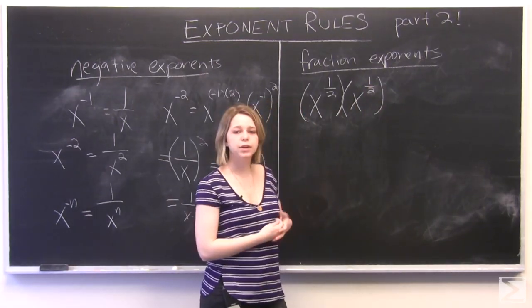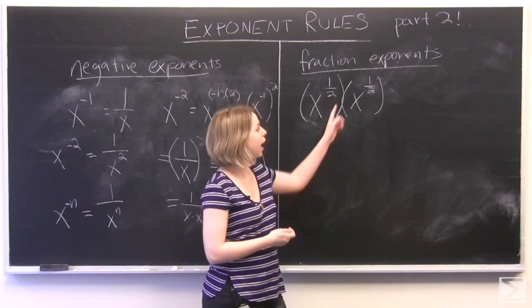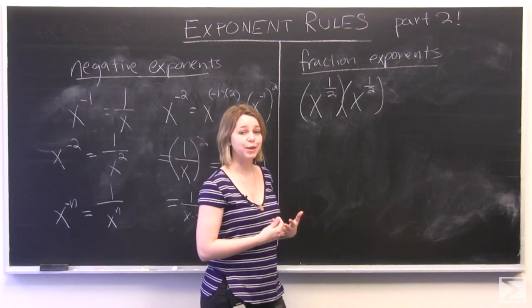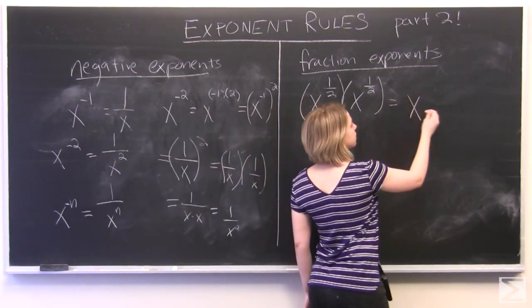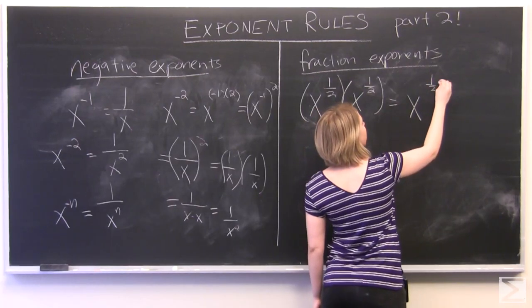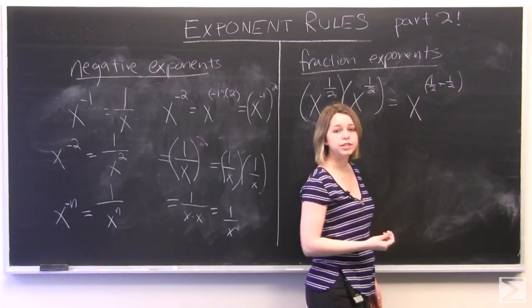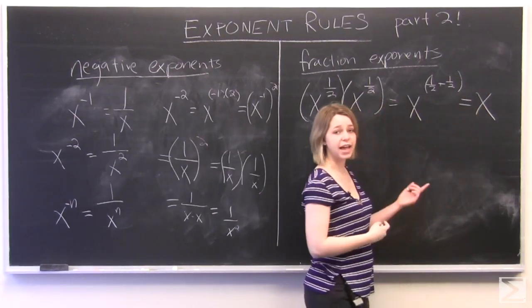As we learned in the previous video, when you multiply two exponents together, you add their exponents. So this would be the same thing as x to the power of 1 half plus 1 half, which is equal to x to the power of 1, which can just be written as x.